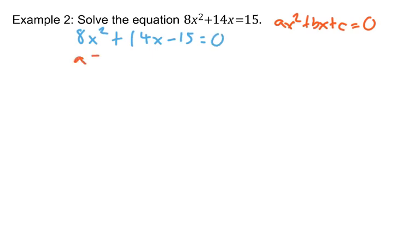Then you can identify your A, which is 8, your B, which is 14, and include any negative signs in the values of A, B, and C. So, C would be negative 15.